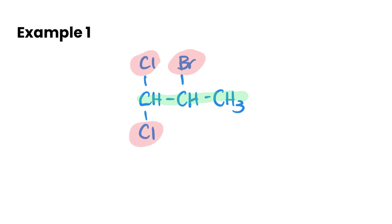Now if we want to number this main chain, let's start from here because that's going to give us a combination of 1, 1, 2, versus if we went the other way we would have 2, 3, 3. So 1, 1, 2 is going to be our lowest possible combination.